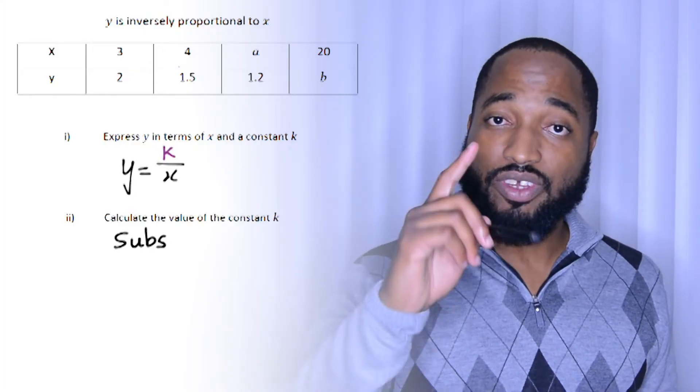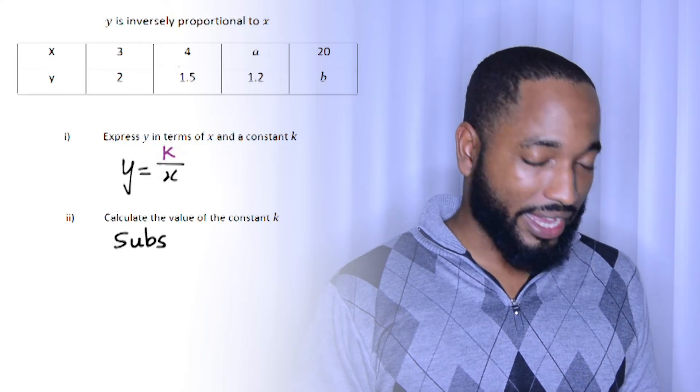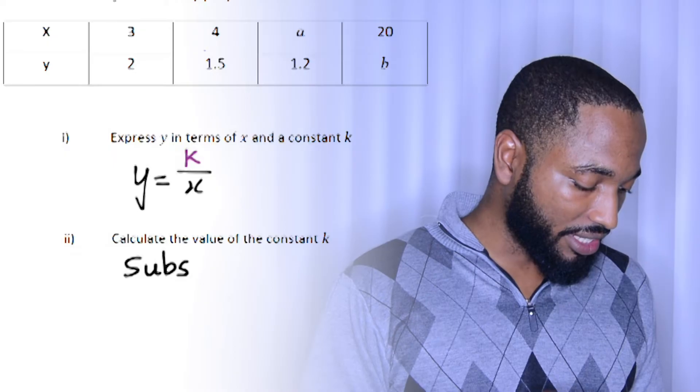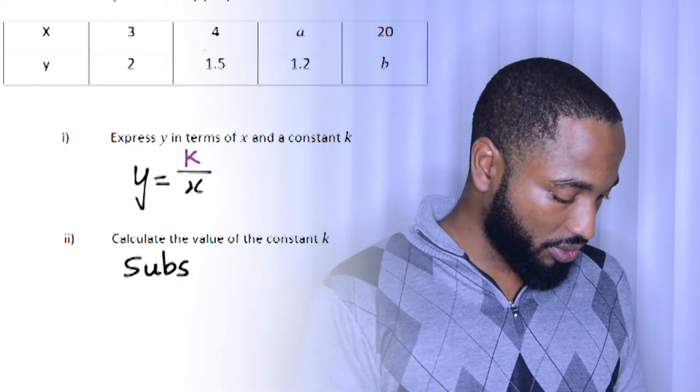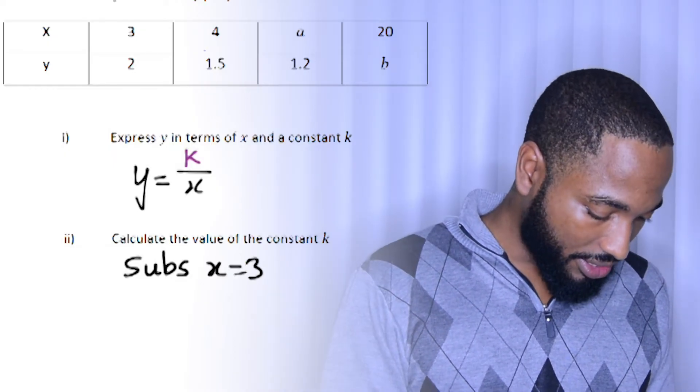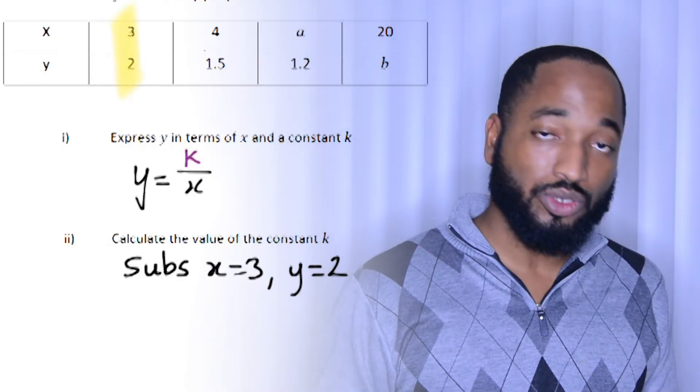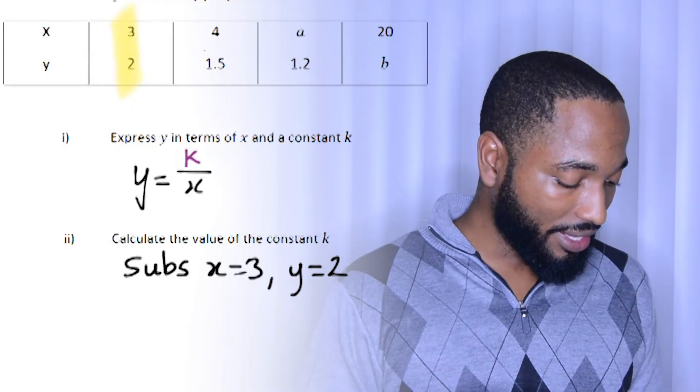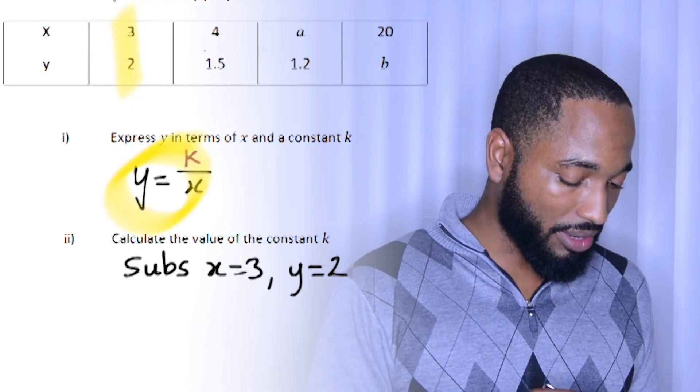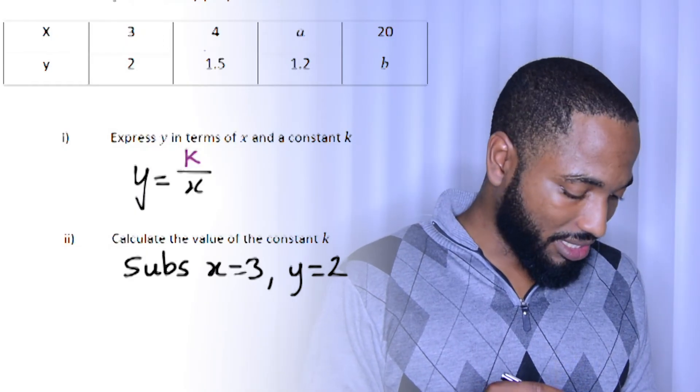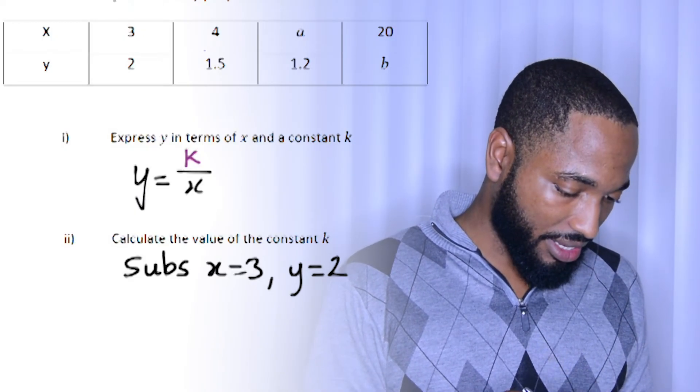So first part, y is equal to k over x. K here is the constant. Calculate the value of the constant k. This is the second part. Substitute x equals 3. Substitute y equals 2. We are basically just going to substitute two known values for x and y into this new equation that we got here. So it's basically a substitution scene now going on here.